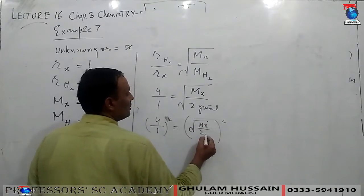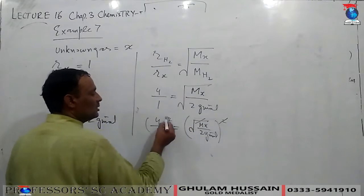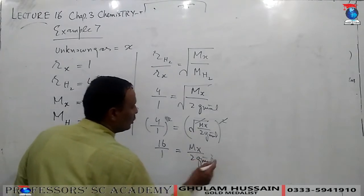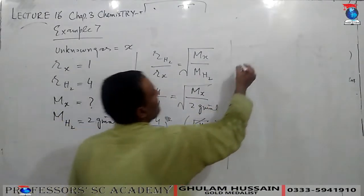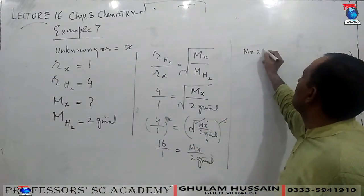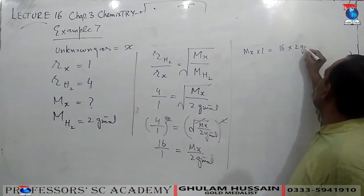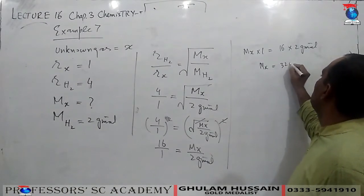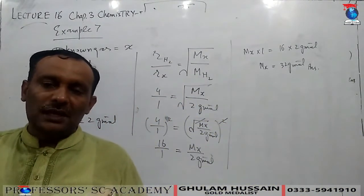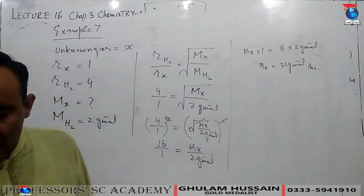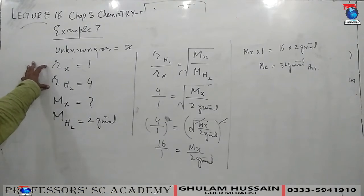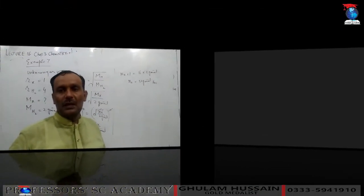Substituting: 4/1 = √(M_X / 2 g/mol). Squaring both sides, the square roots cancel: 16 = M_X / 2 g/mol. Cross-multiplying: M_X × 1 = 16 × 2 g/mol, so M_X = 32 g/mol. This is how we can determine the molecular mass of an unknown gas from its diffusion property by comparing it with the diffusion of another gas like hydrogen. Any questions? May Allah be with us. Thank you.